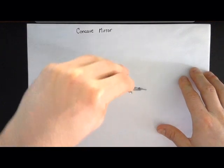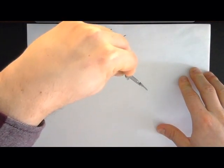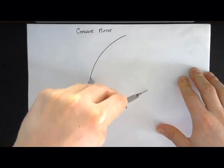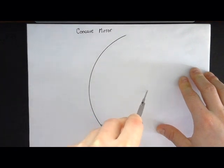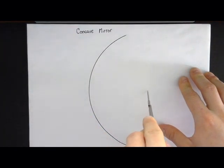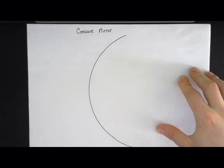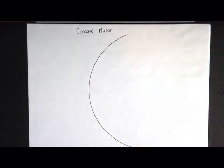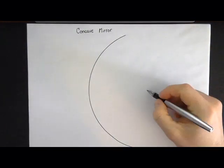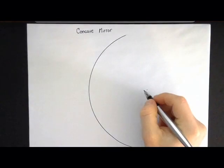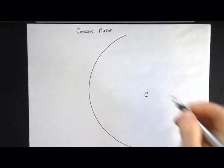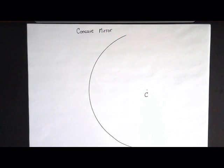We're going to begin by drawing a circular mirror using my compass like so. There's my circular mirror and the compass left a nice little dot right where the center of the mirror is.